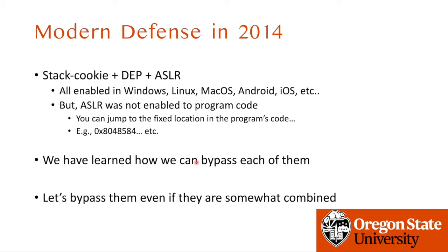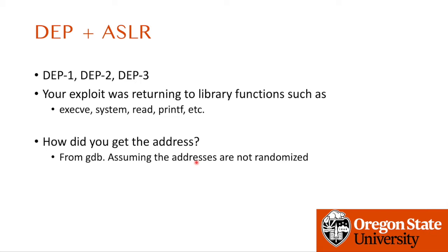Before starting to learn about return-oriented programming, let's do a recap on DEP and think about what will be different if we assume ASLR is also enabled. In the DEP challenges, your task was to call library functions such as system, open, read, write with specific arguments like /bin/sh. That was possible because ASLR was turned off in VMCTF1, so you could easily find all the addresses. But in modern systems where ASLR is enabled, you cannot get fixed addresses for these functions. So how can you bypass both defenses at the same time?